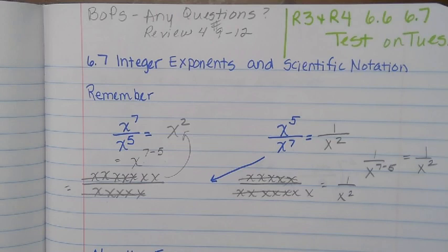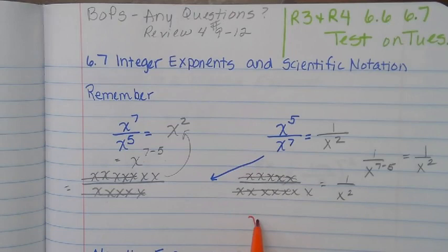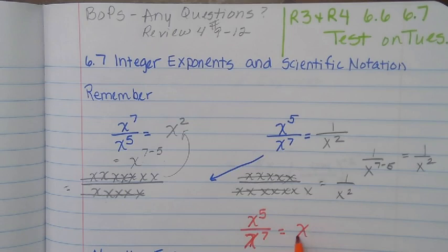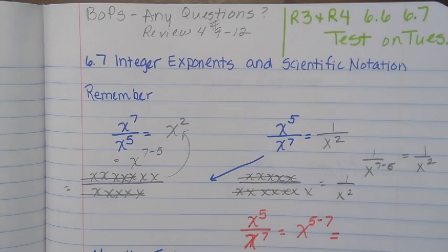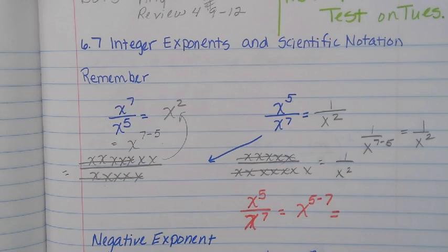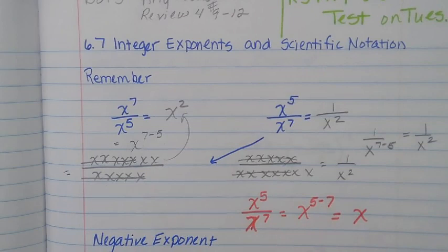But what if I made a mistake — what if I did it the other way? If I take x to the seventh and subtract numerator minus denominator, what do I get for my exponent? If I do five minus seven, I get negative two.